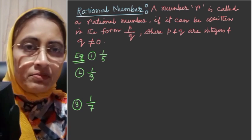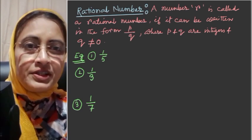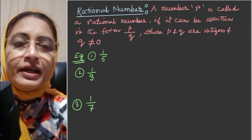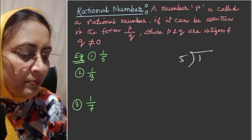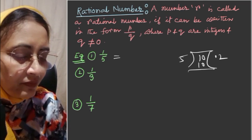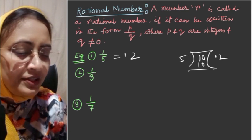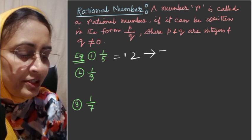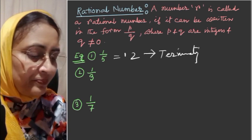A rational number has either a terminating or a non-terminating repeating decimal expansion. For example, 1 by 5: dividing gives 0.2, so this is a terminating decimal expansion.